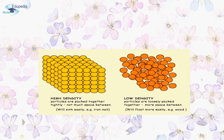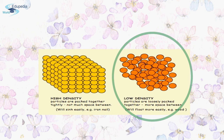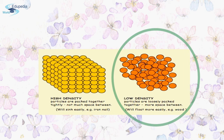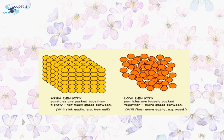Substances which have lower density have very loosely packed molecules — the intermolecular forces between the molecules are very weak and there is more space between the individual molecules. For example, wood has a lower density than an iron nail.